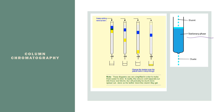You put your mixture at the top of the column and add solvent. The solvent ideally moves through very quickly. If your stationary phase is polar, your mobile phase or solvent needs to be non-polar so they don't interact very well. As the solvent travels through, whichever part of your mixture is most attractive to the solvent will travel through first.